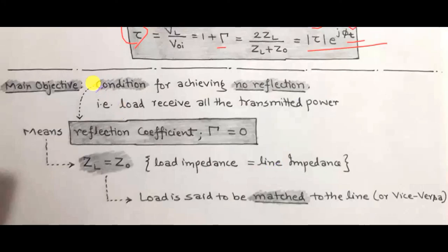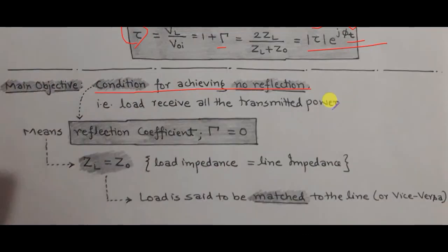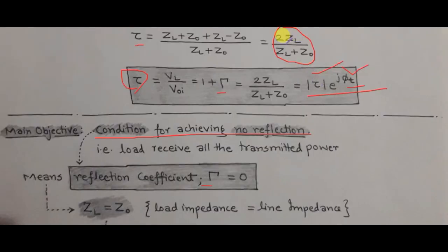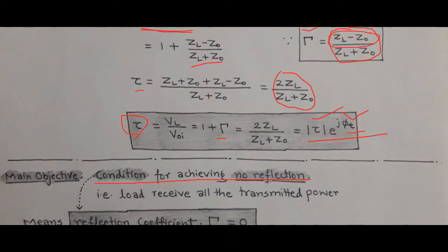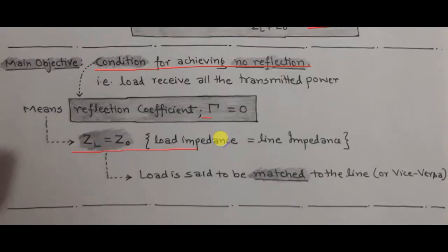The next objective is to determine the conditions to achieve no reflection, meaning all the power is transmitted to the receiver side. To achieve no reflection, the reflection coefficient Tau must equal zero. Since Tau = (Z_L minus Z0)/(Z_L plus Z0), setting Z_L equal to Z0 makes the numerator zero, giving Tau = 0. Therefore, the condition for no reflection is that the load impedance equals the characteristic impedance of the transmission line: Z_L = Z0.